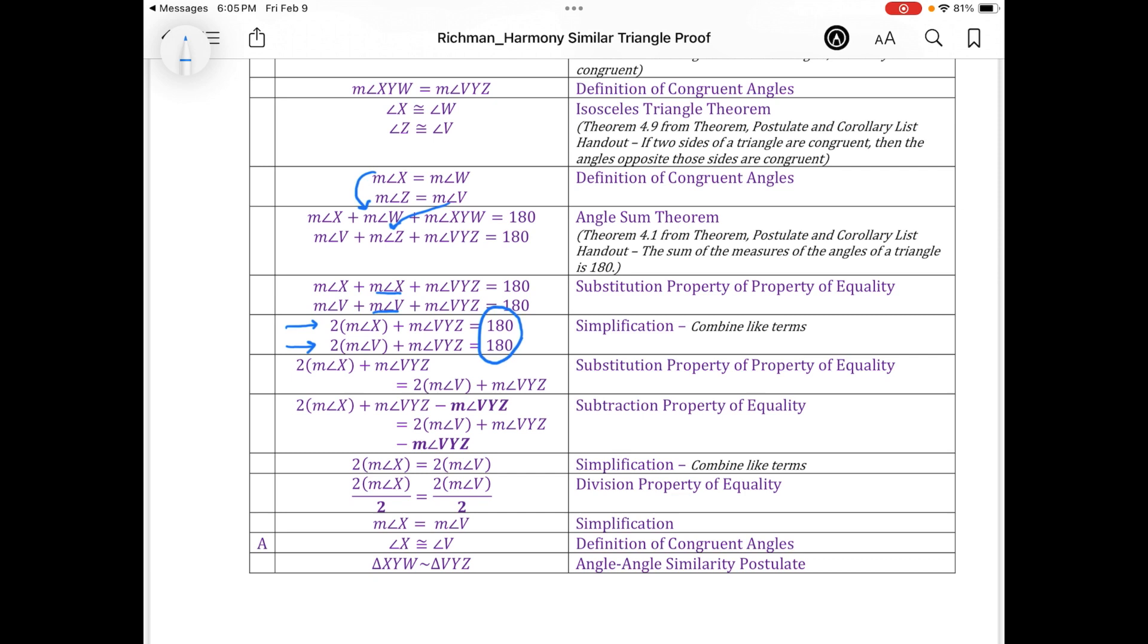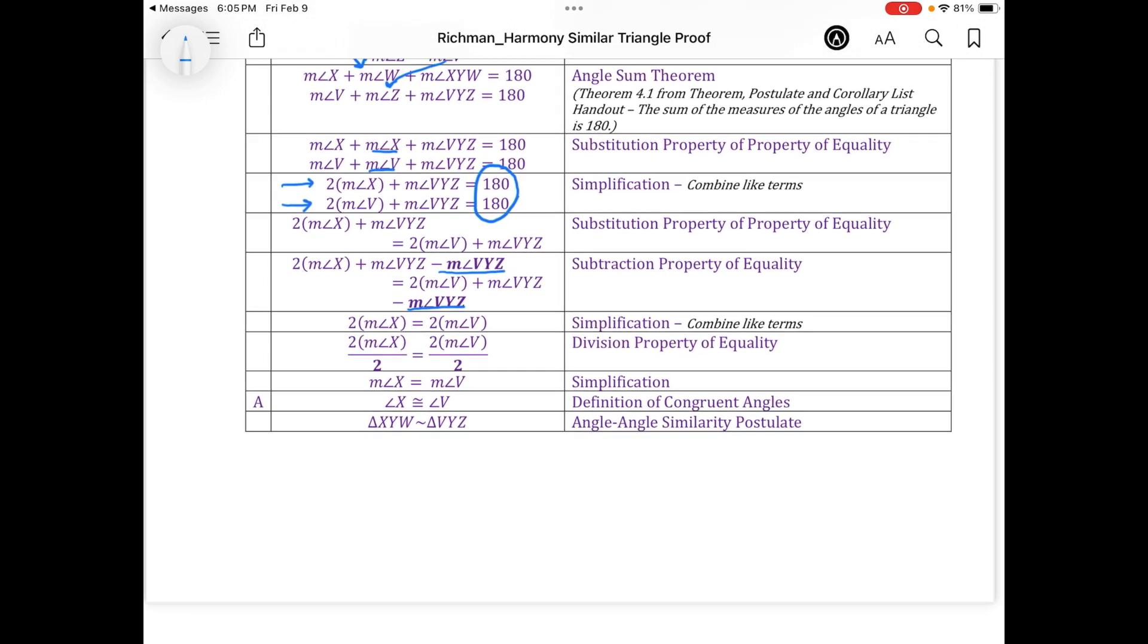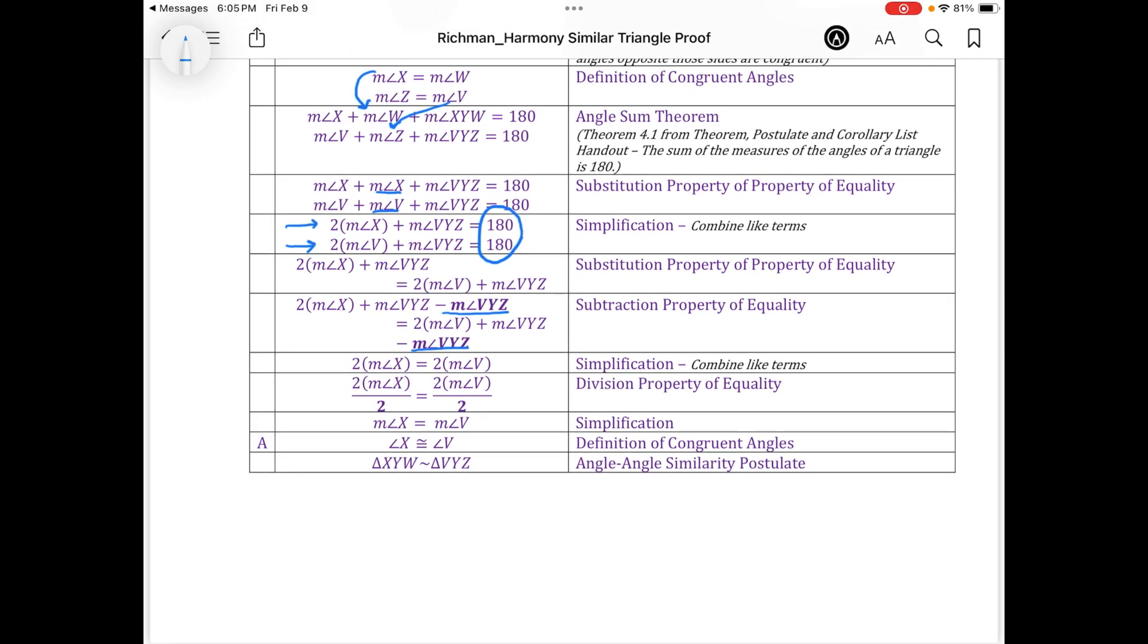Well, then I saw that on both sides, I could subtract using the subtraction property of equality. I could subtract that common measure of angle VYZ, leaving me then with two times the measure of angle X equal to two times the measure of angle V.